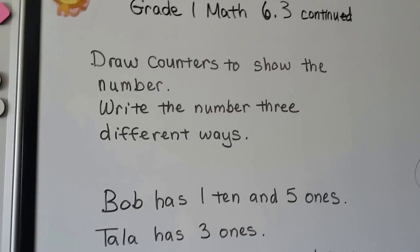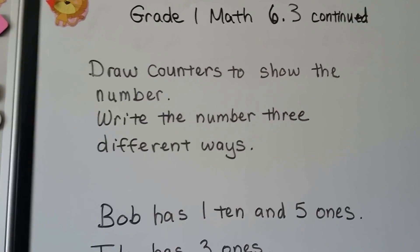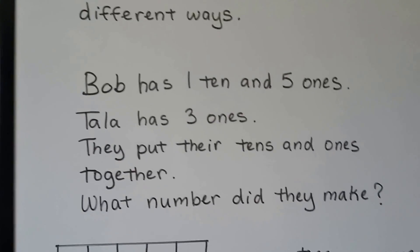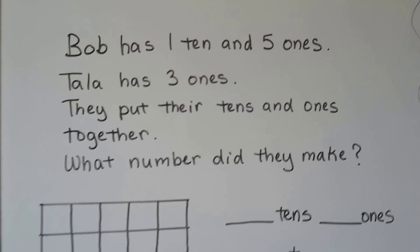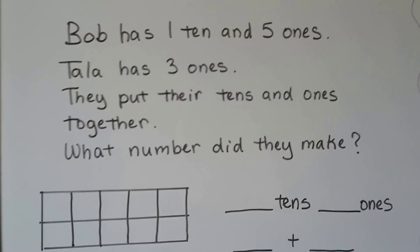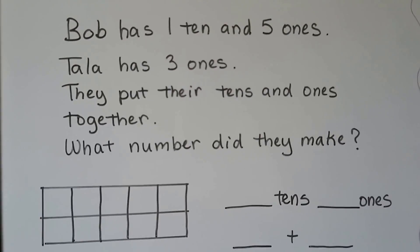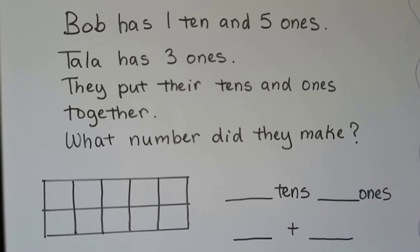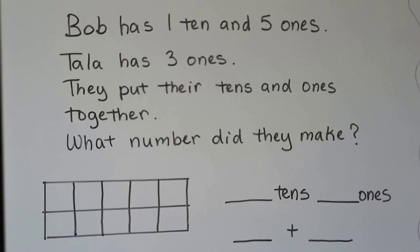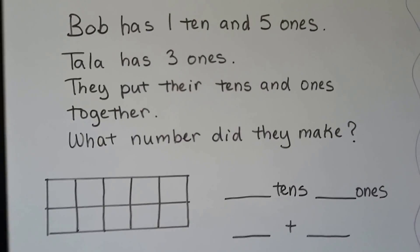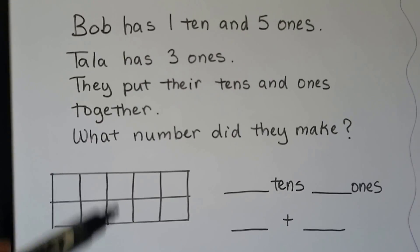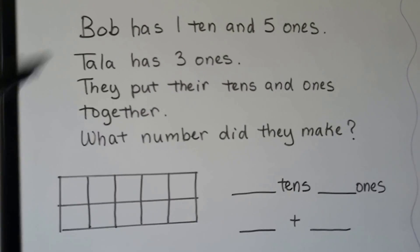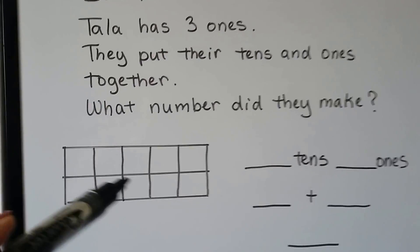We can draw counters to show the number and write the number three different ways. Bob has 1 ten and 5 ones. Tala has 3 ones. They put their tens and ones together — what number did they make? So let's put Bob's here and draw the counters. He has 1 ten, so we need to fill this 10 frame.